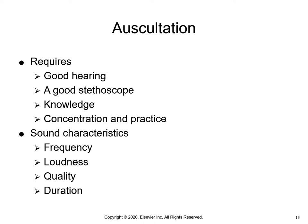Frequency is the number of sound waves generated per second by a vibrating object. The higher the frequency, the higher the pitch of a sound. Loudness is an amplitude of the sound wave. Auscultated sounds can range from soft to loud. Quality refers to sounds of similar frequency and loudness from different sources; terms like blowing or gurgling may be used. Duration is the length of time that sound vibrations last — short, medium, or long. Layers of soft tissue will dampen the duration of sounds from deep internal organs.